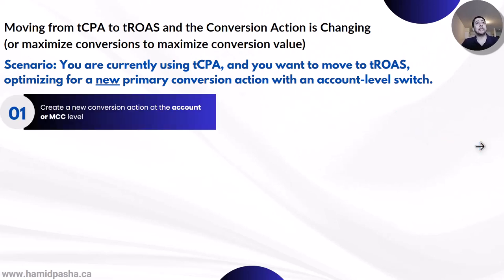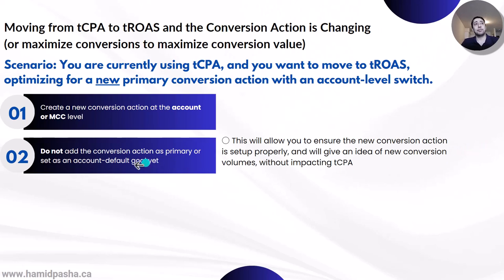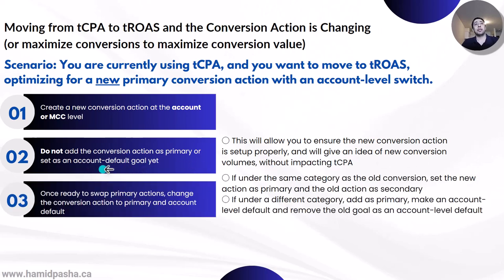In step one, create the new conversion action at the account or MCC level. For now, do not add the new conversion action as primary or set it as account default level goal yet. This will allow you to make sure that the new conversion action is set up properly and will give you an idea of new conversion volumes without impacting the bid strategy — the target CPA that you are currently using. After you make sure that the data are correct, when you are ready to swap primary actions, change the conversion action to primary and account default.